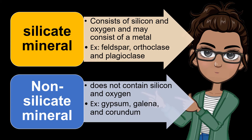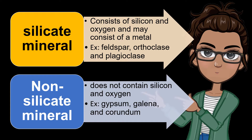A silicate mineral contains silicon and oxygen and may consist of a metal. Examples are feldspar, orthoclase, and plagioclase. A non-silicate mineral is one that does not contain silicon and oxygen. Examples of which are gypsum, galena, and corundum.